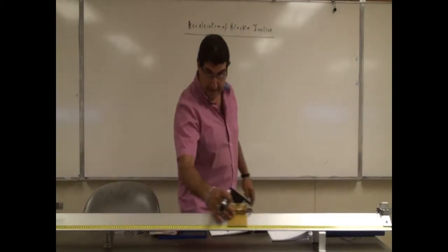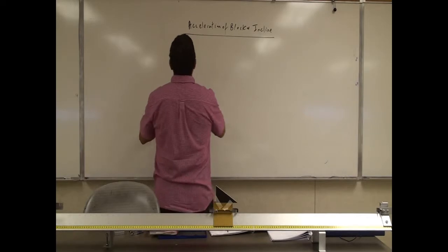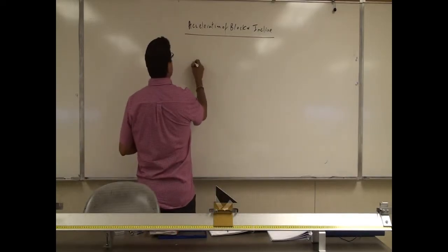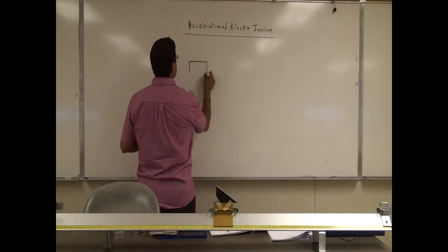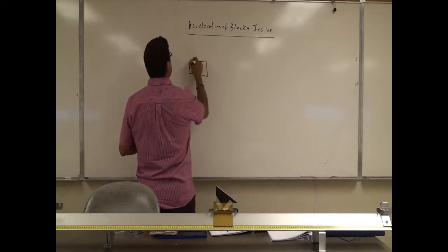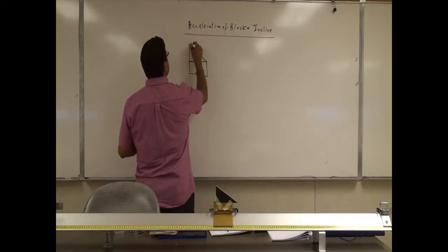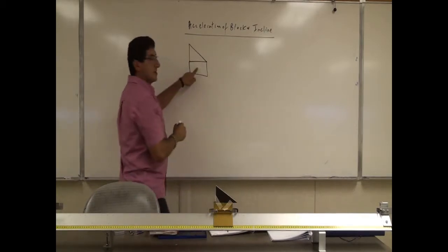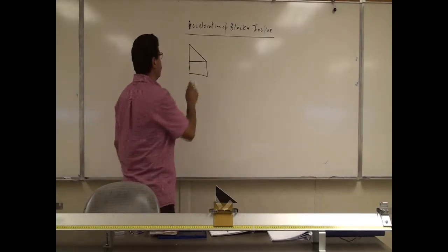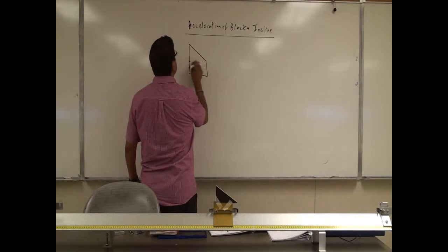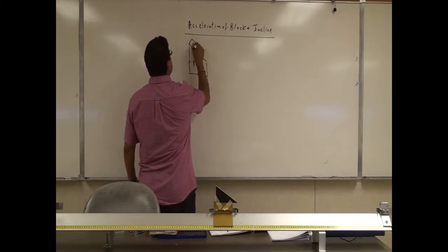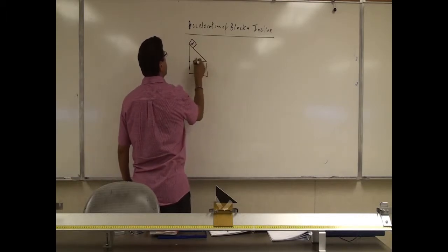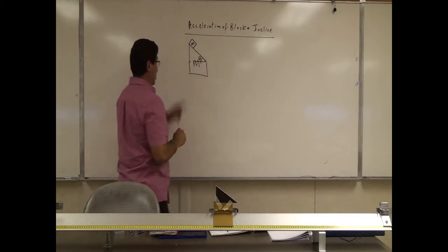So let's do the math of that. The glider together with the incline — I'll call that big M. And then this block here, little m. And then this is angle theta.